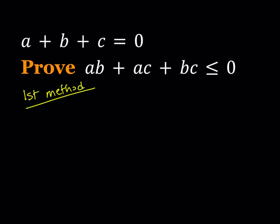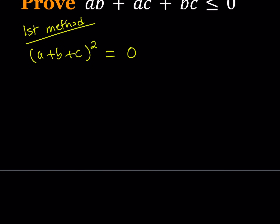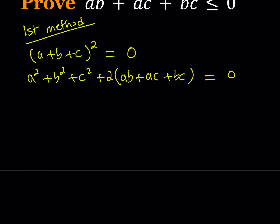My first method basically involves manipulating the given expression, and I'll start by squaring it. Since we know that a plus b plus c is equal to zero, I'm going to square that and its square is also going to equal zero. When you expand this you're going to get a squared plus b squared plus c squared plus two times the quantity ab plus ac plus bc, and we know that this is equal to zero.